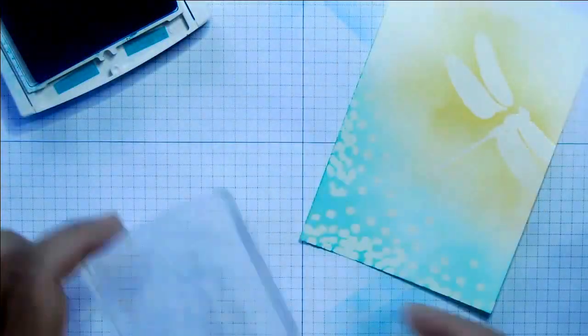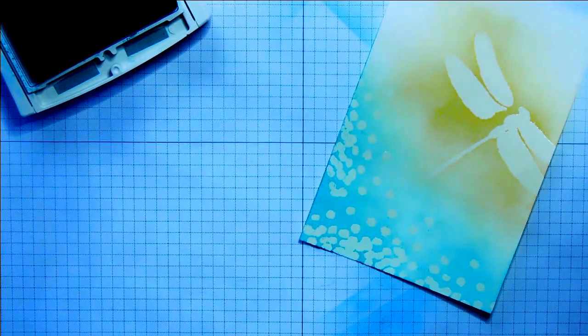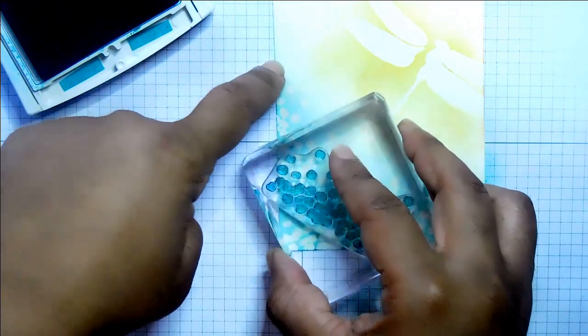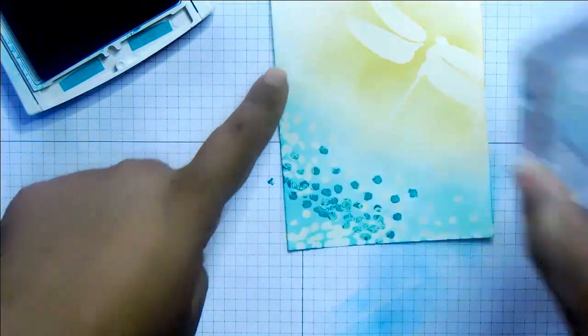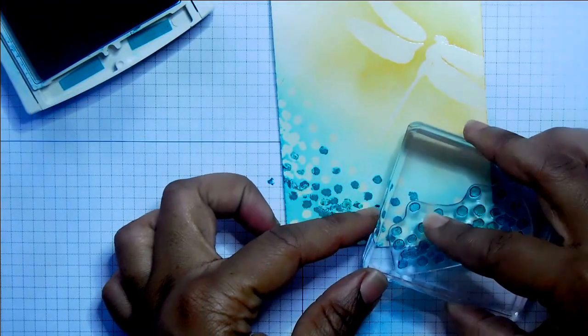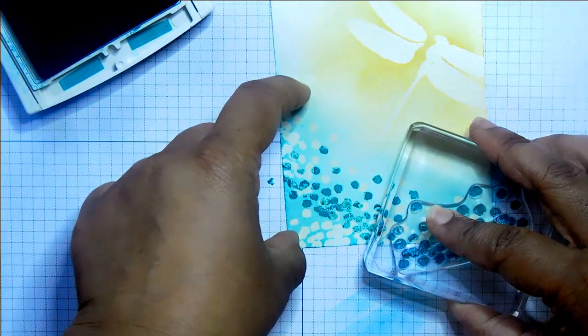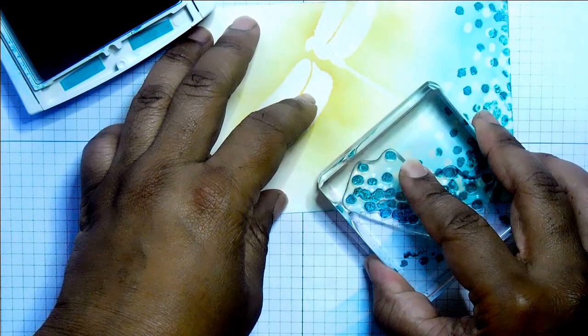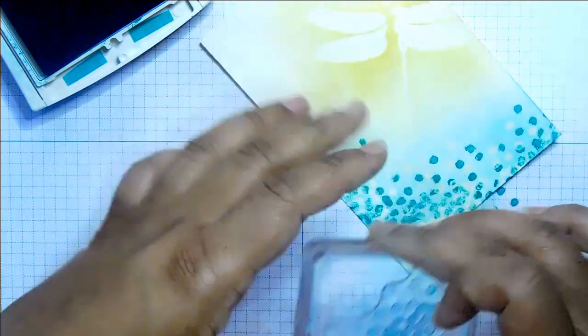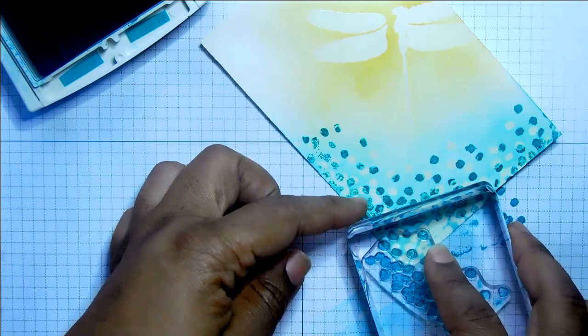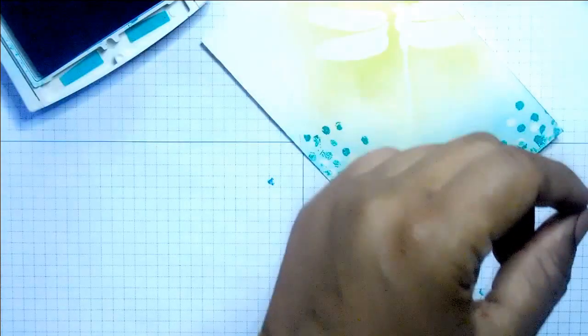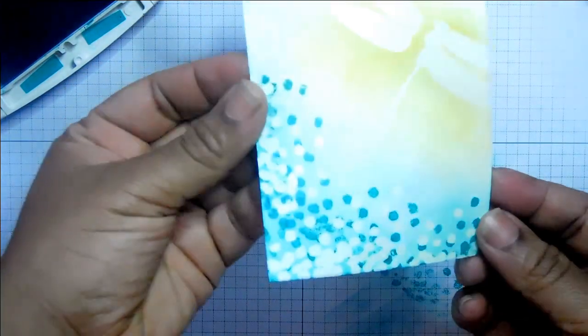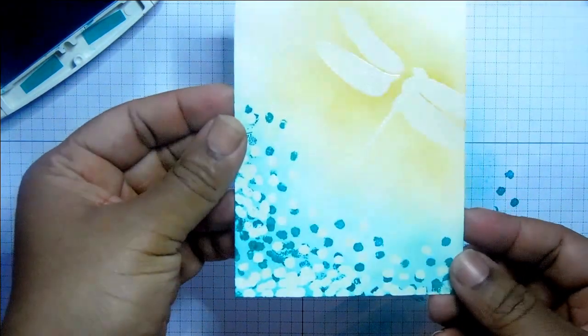I'm just going to take the Bermuda Bay and stamp those spots again. Just peeling it off. So the same spots that we did before. I'm just going to stamp over the top of where you stamped earlier. And just be careful because it might smudge a little bit. But that's okay. And then get that tissue again and rub over. So it will look like those spots are underneath the embossed spots. That's quite pretty.